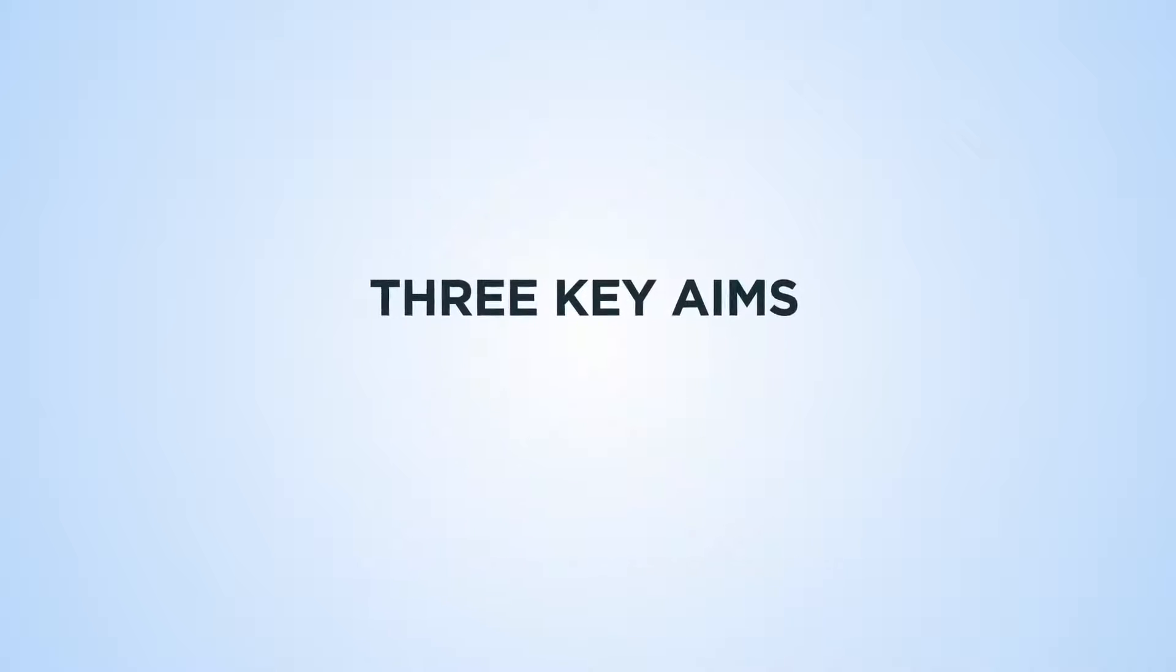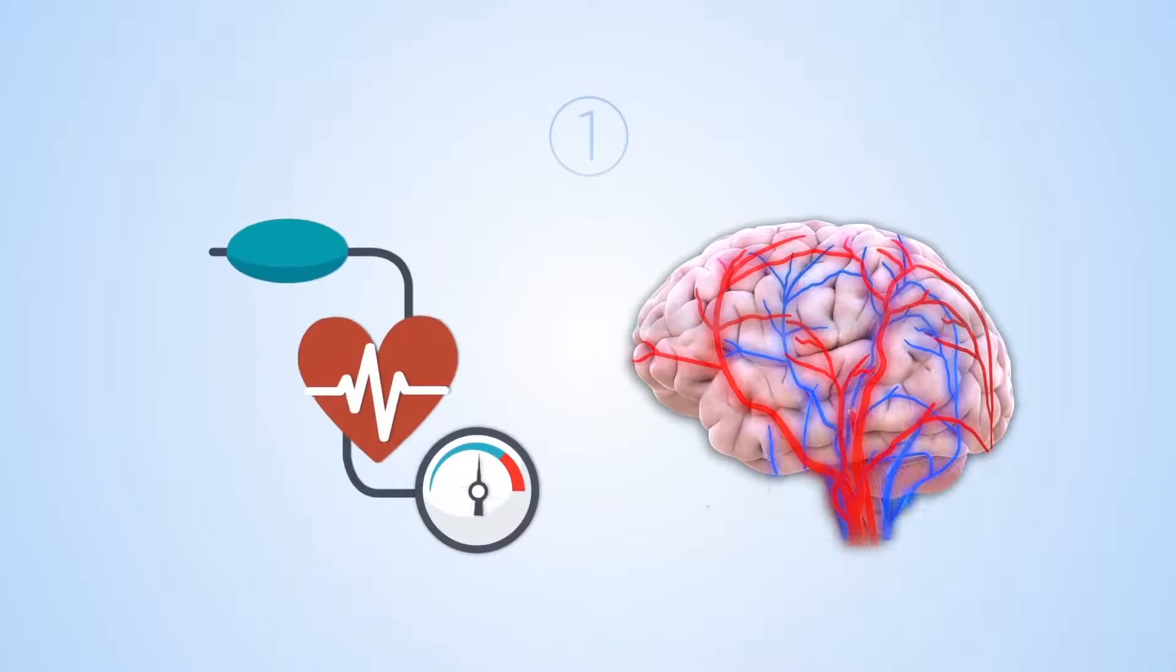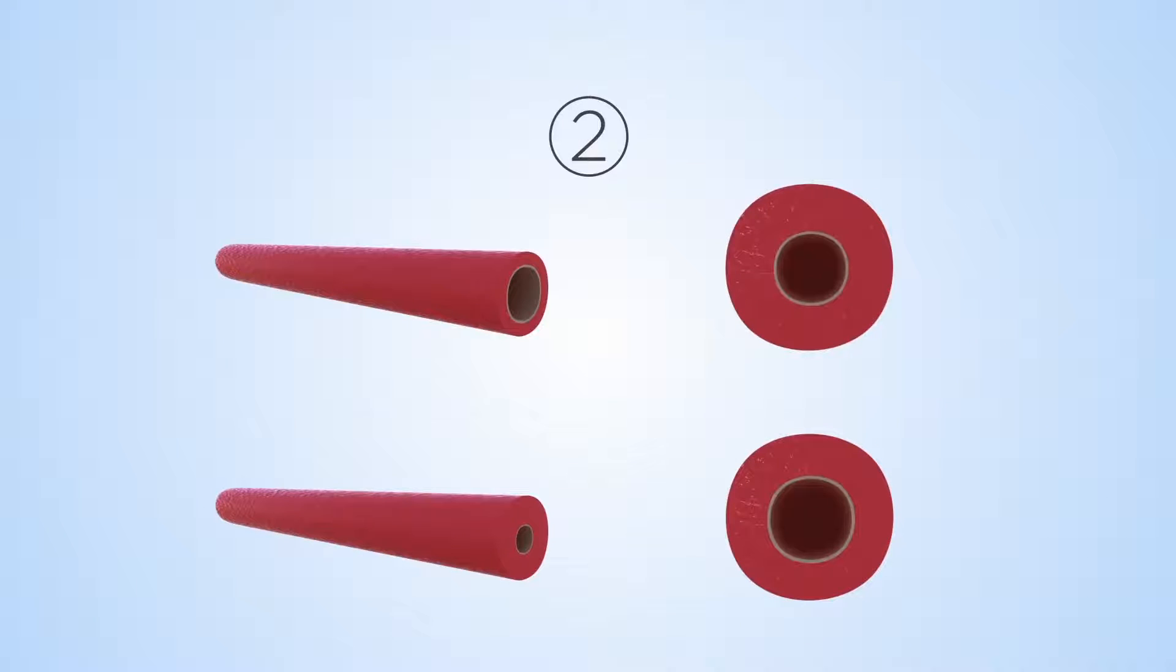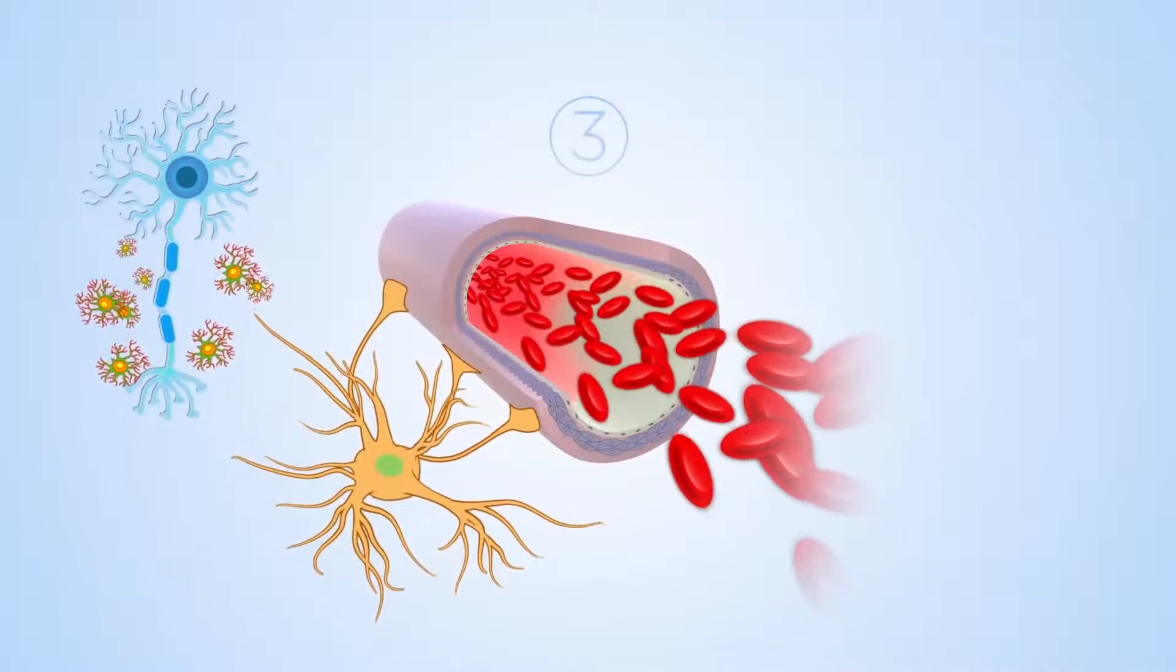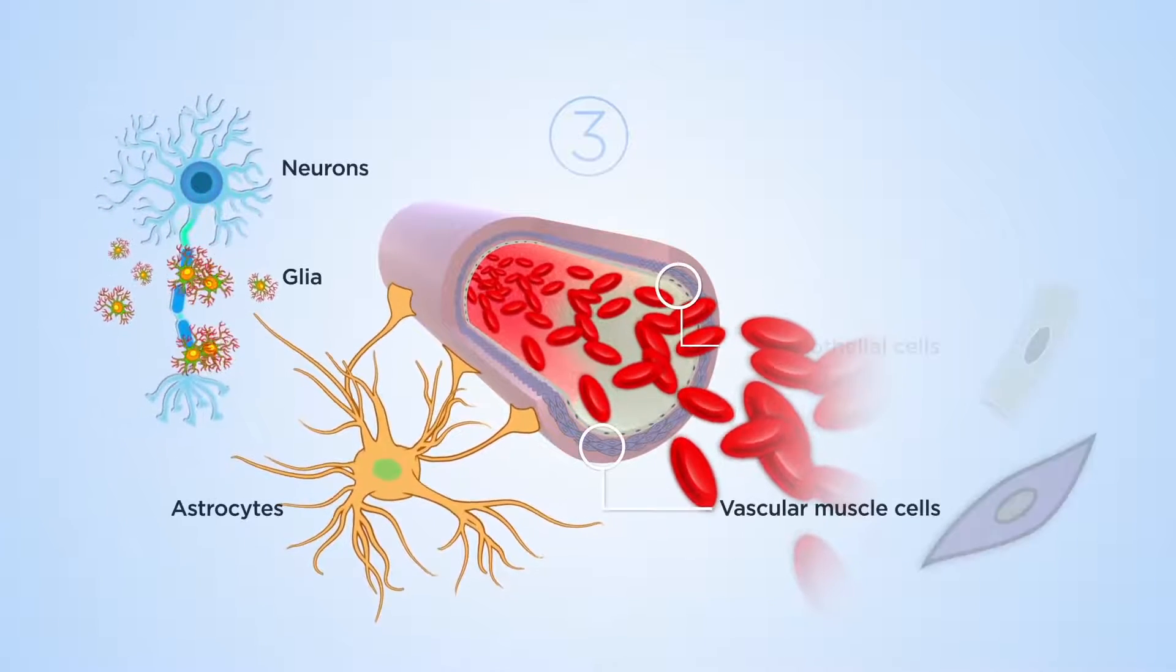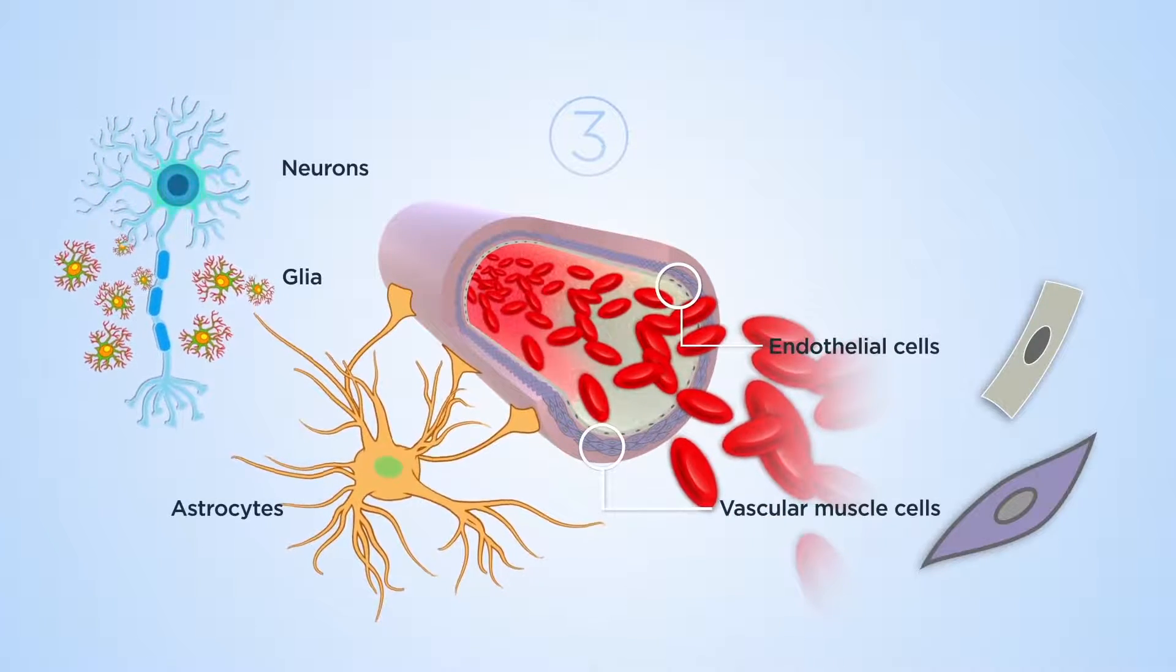Harder's research has three key aims. The first aim is to understand how the brain responds to changes in cerebral arterial blood pressure. The second aim is to pinpoint exactly how the brain responds to blood pressure changes to cause vessel constrictions. The team also want to understand how arterial muscle cells interact with other cell types to govern blood flow.